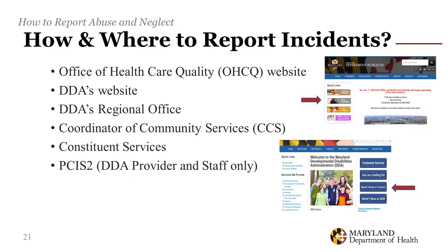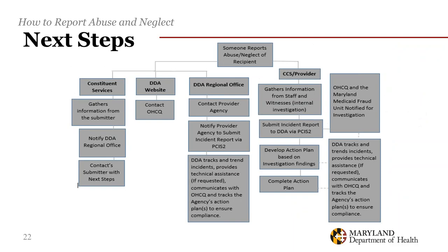How and where should incidents of abuse or neglect be reported? To the Office of Healthcare Quality or the DDA via the website. To one of DDA's regional offices, to your family member's Coordinator of Community Services, to DDA Constituent Services, or if you are a DDA provider or DDA staff, directly into our Provider Consumer Information System. We'll look at four reporting processes: through constituent services, using the DDA website, contacting the local regional DDA office, and through your CCS or provider.